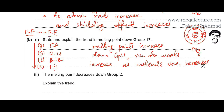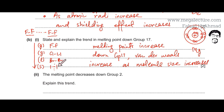Van der Waals forces increase because as you move down the group, the molecule has more electrons, giving more chances for temporary dipole-induced dipoles to form. For example, iodine has around 100 electrons total — when these fluctuate randomly, the temporary dipoles formed are very strong. Fluorine only has 18 electrons in total, so the partial charges are weaker, meaning attraction between fluorine molecules is much weaker than between iodine molecules.